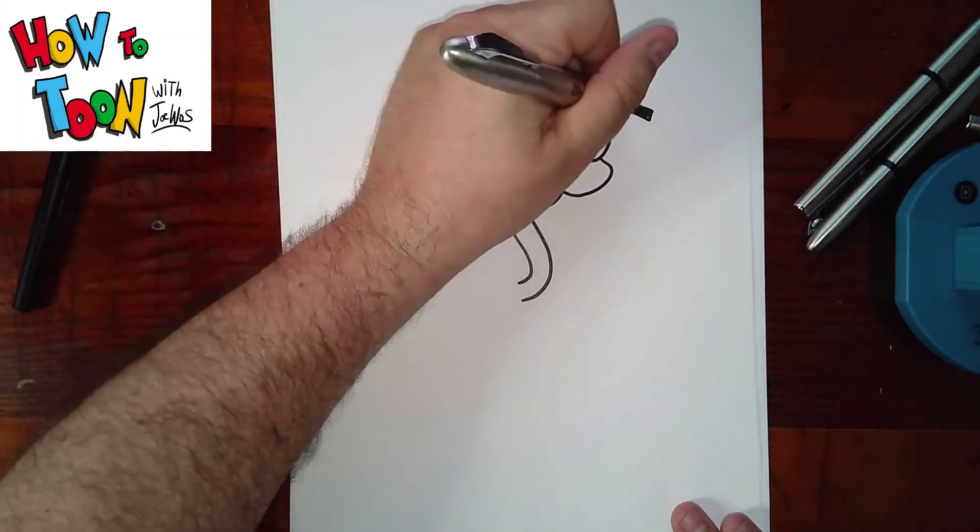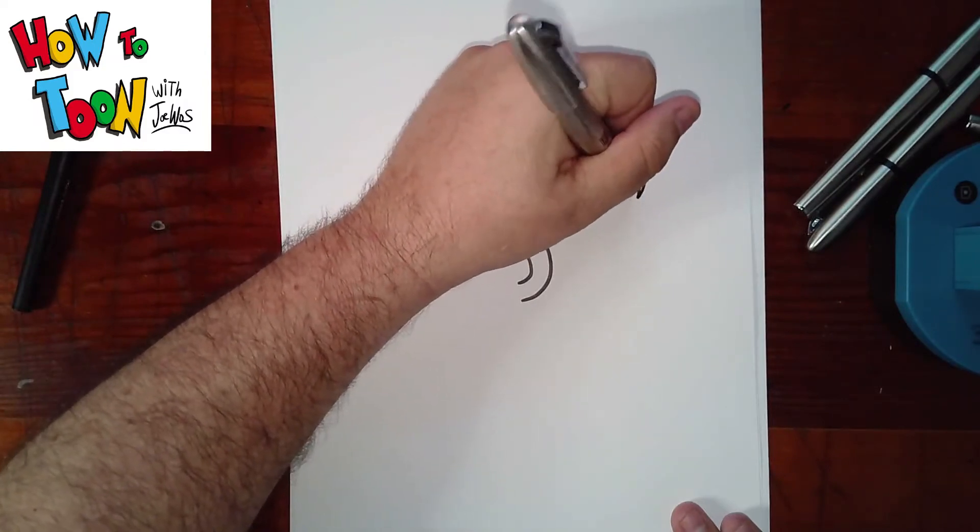Then you want to add the tassel. That's down, O, and W.